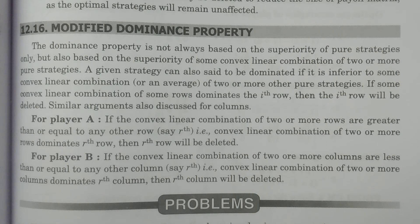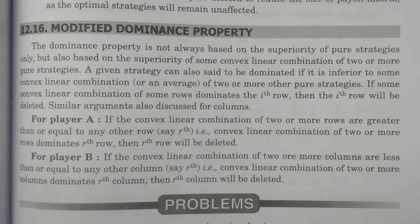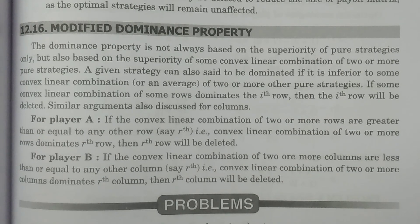Then for player B, the inferior strategy — that is the one with elements less than or equal — is going to be deleted. For player A, the strategy with elements greater than or equal is going to be deleted.